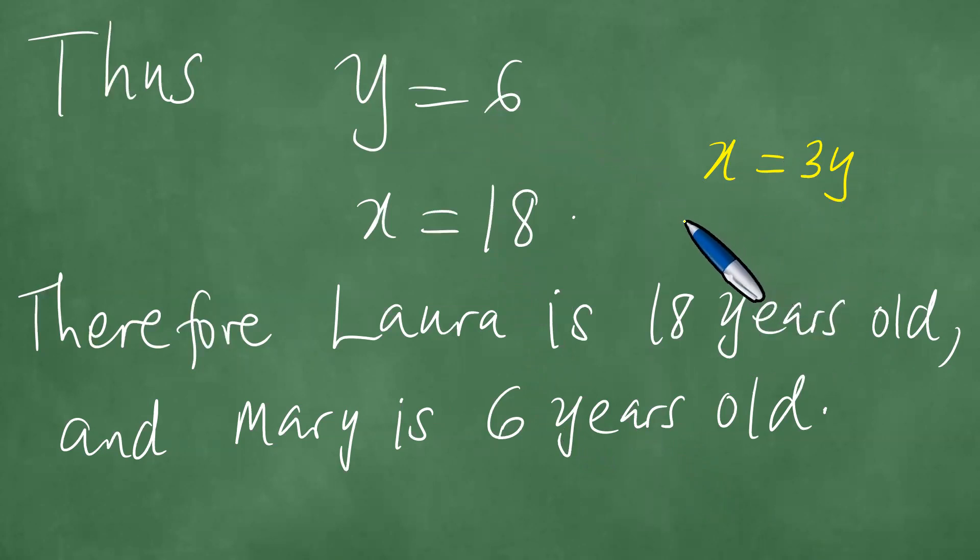But also there's another equation that said that x plus 7, together with y plus 7, the result actually is 38 years. How true is this? Because if you add x and y, you add x plus 7, or Laura's age plus 7, you get 25.